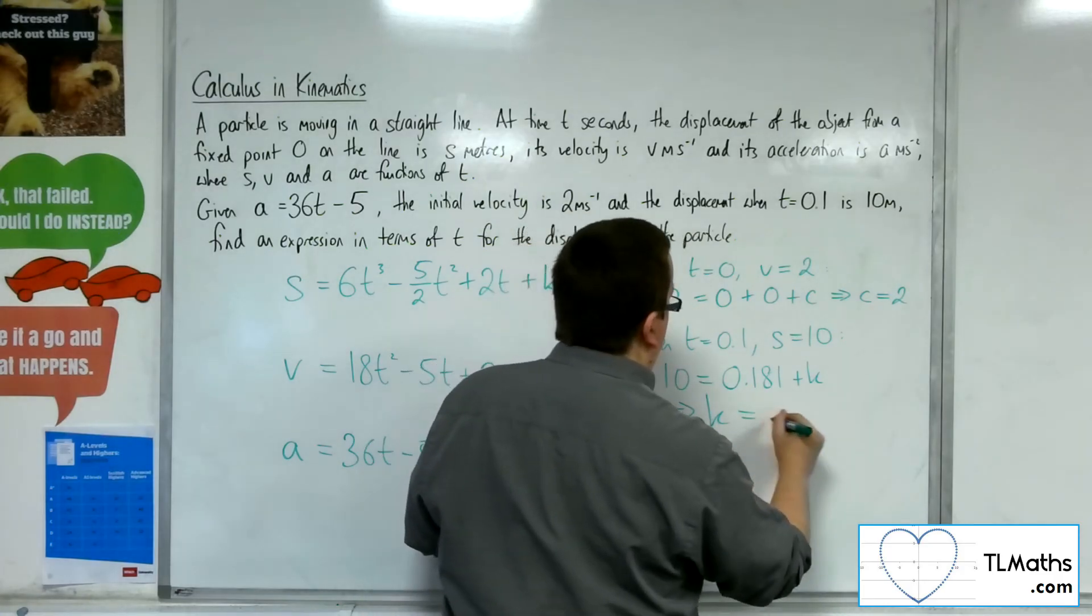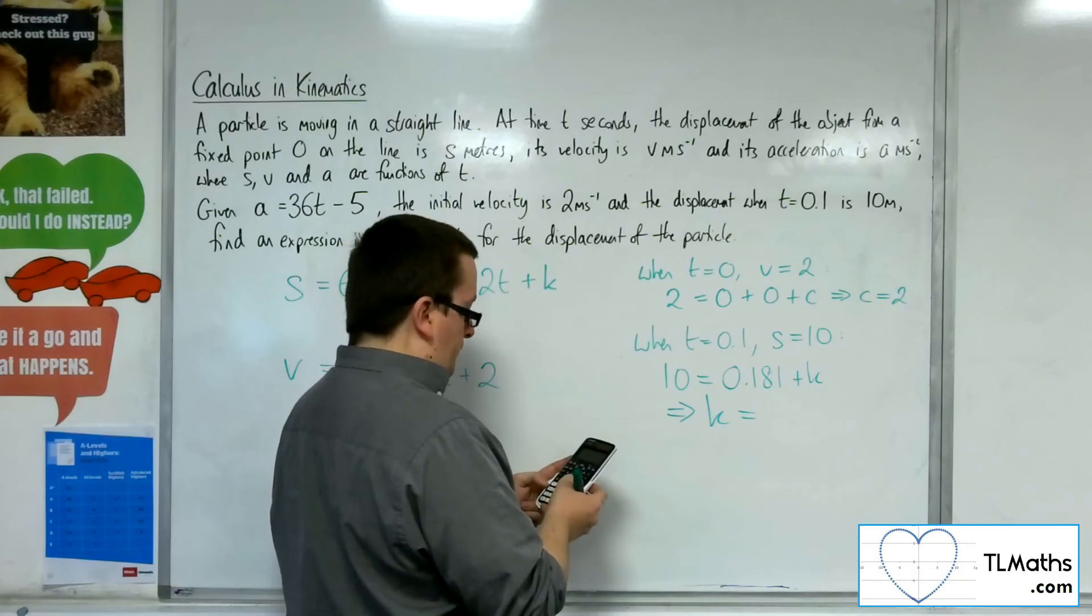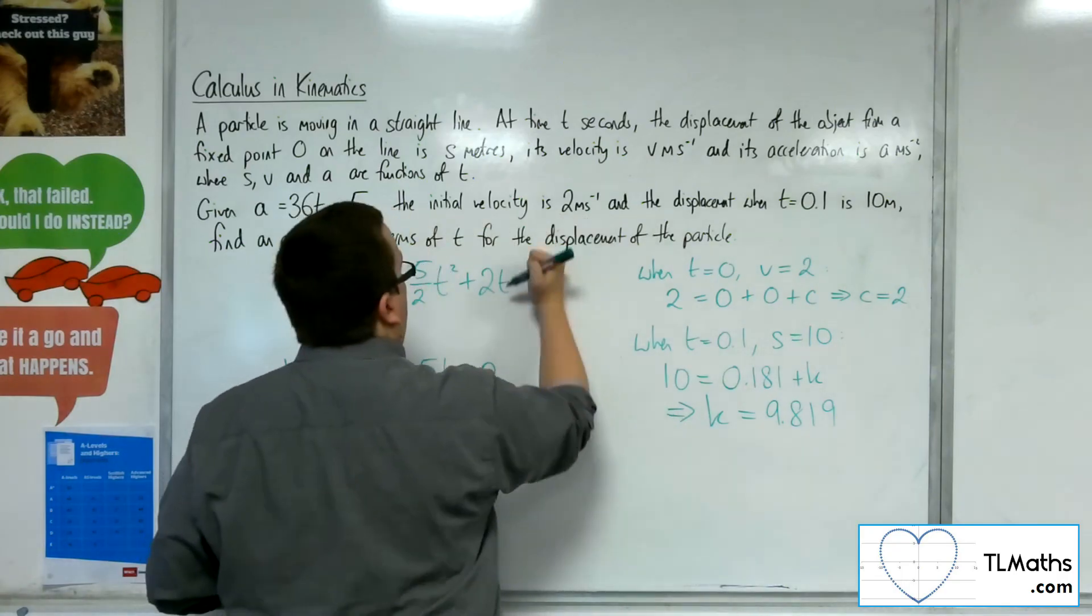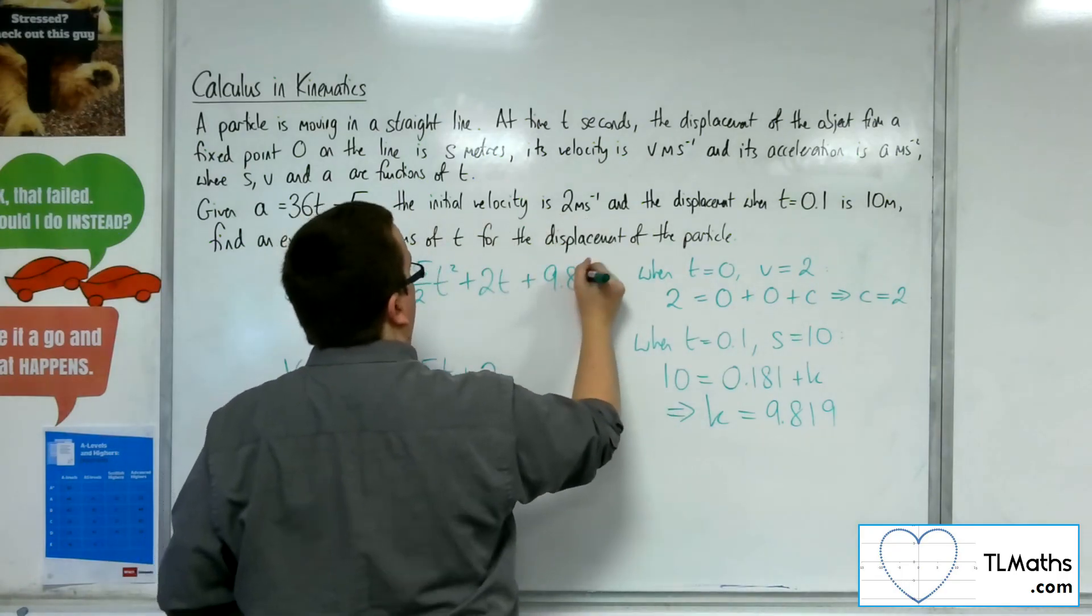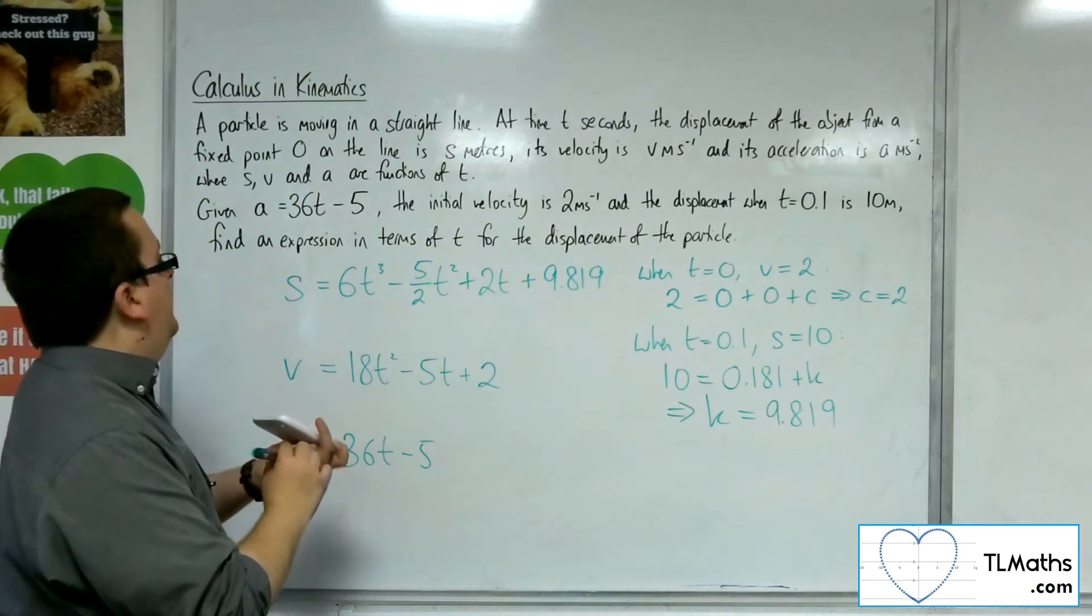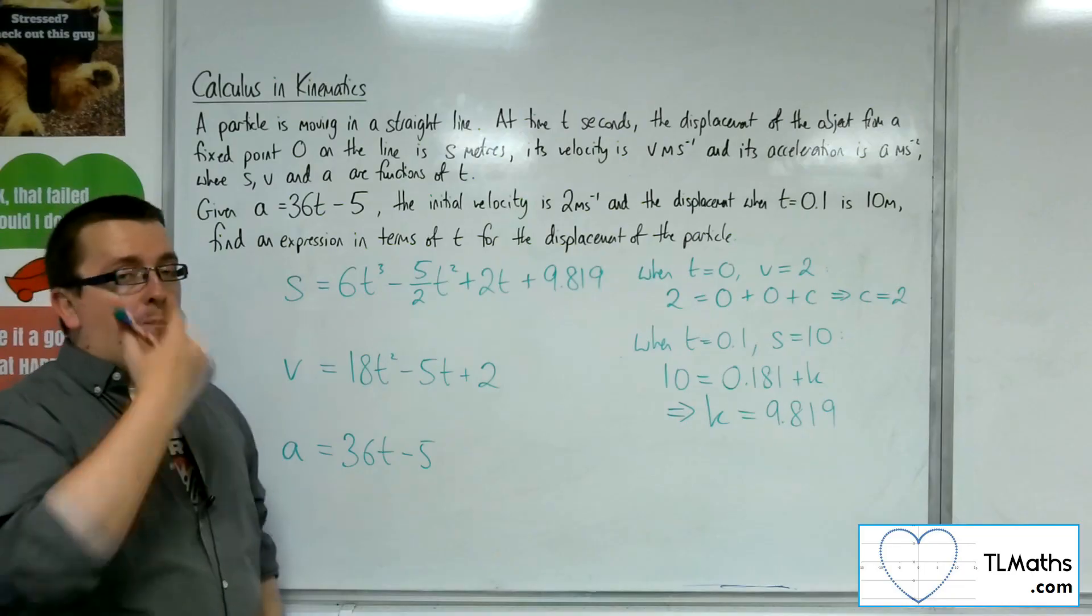So k is 10 take away the 0.181. And that gets to be 9.819. So that's the k. And so that is an expression in terms of t for the displacement of the particle.